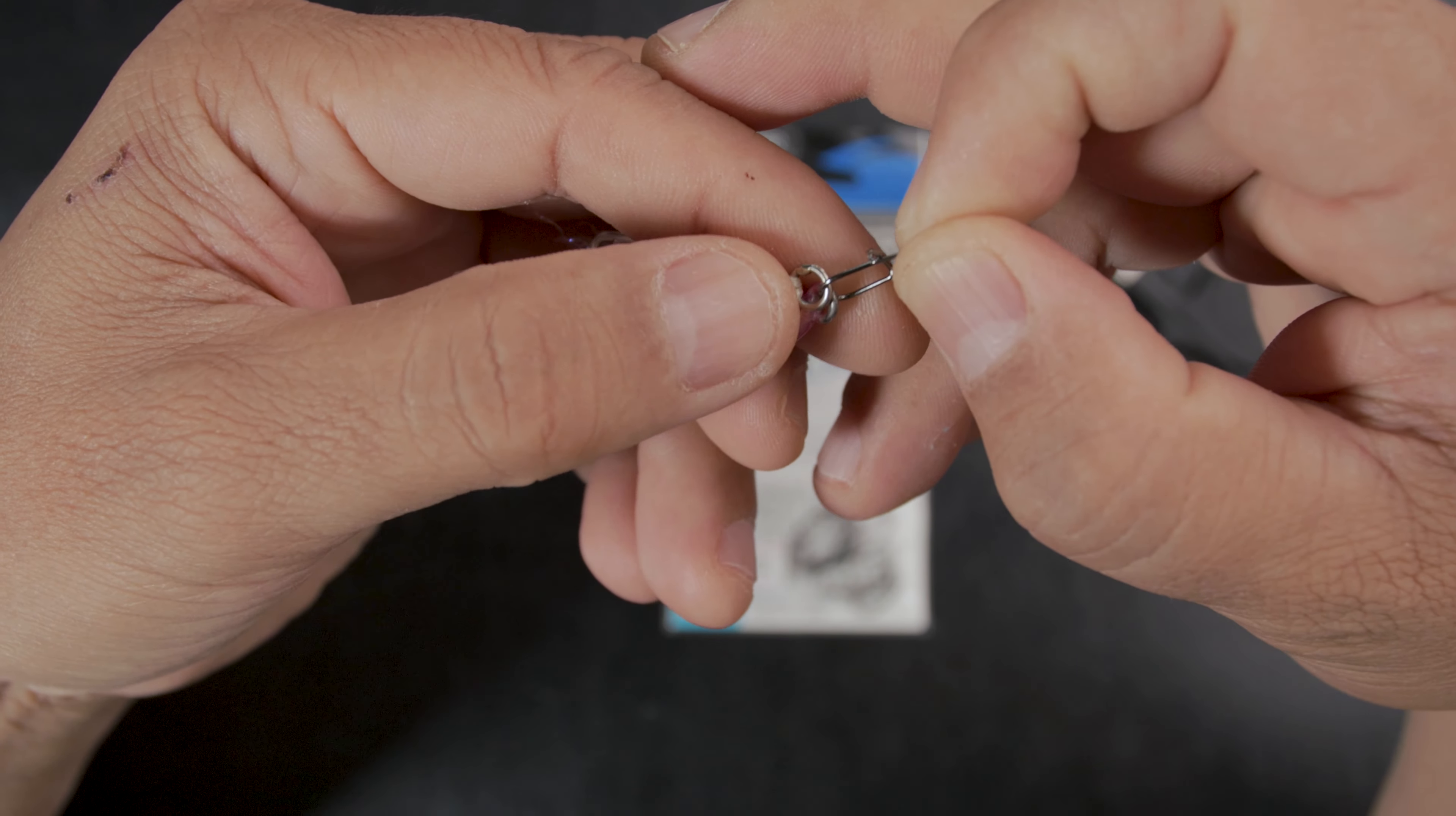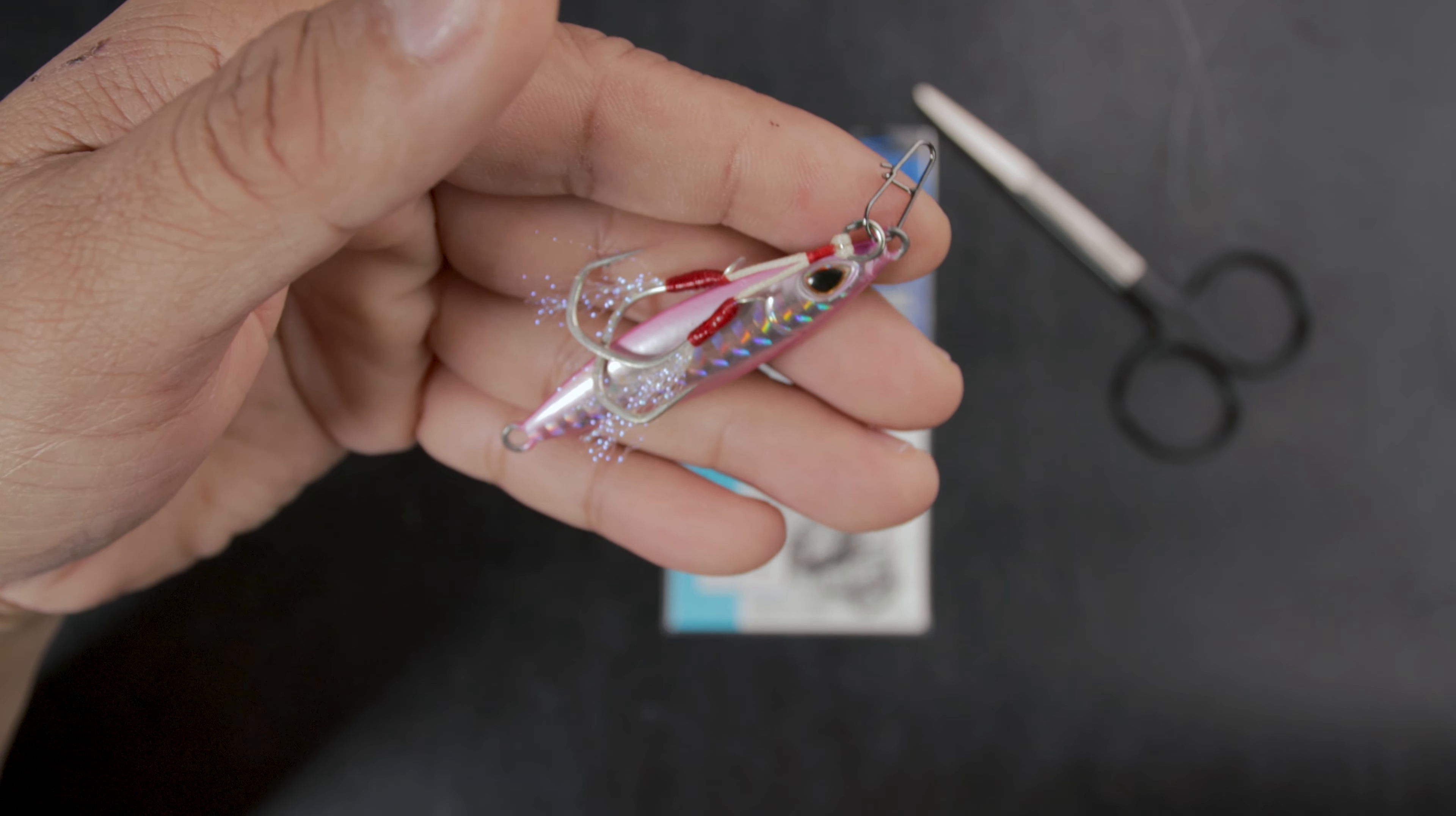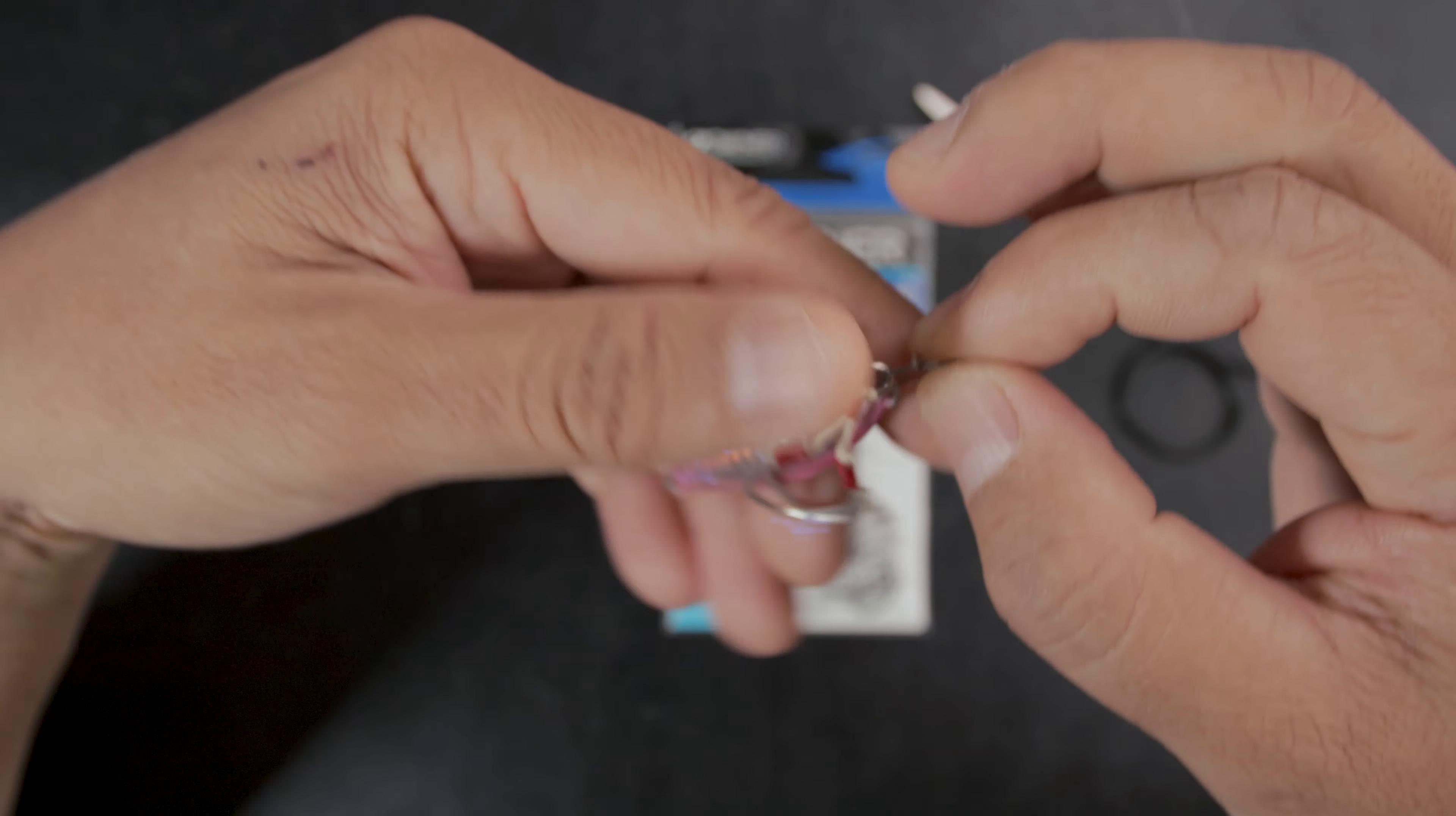Right now it could be a 20 gram Jig Para, it could be a 40 gram Slow Rocker, a 10 gram Jig Para, could be anything. And mind you, I could even put a plug on this one. So it's something that I could use to cover the top, the middle, the bottom. I could use a crankbait for this. It's a very good exploring tool.